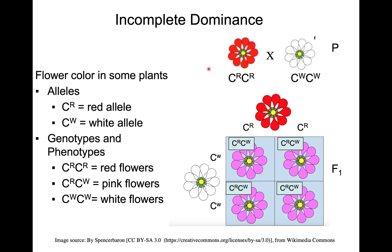Let's look at a cross. We have pure-breeding red and white flowers. These would be the gametes produced by the red flower, and these would be the gametes produced by the white flower. When you put them together in a Punnett square, all the F1 progeny are heterozygotes and they are all pink.